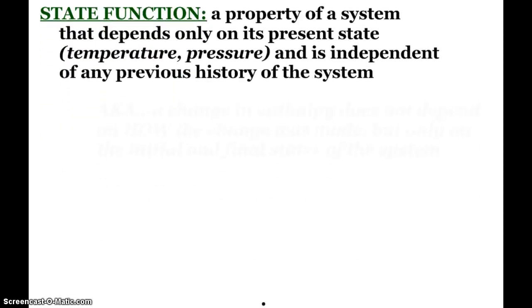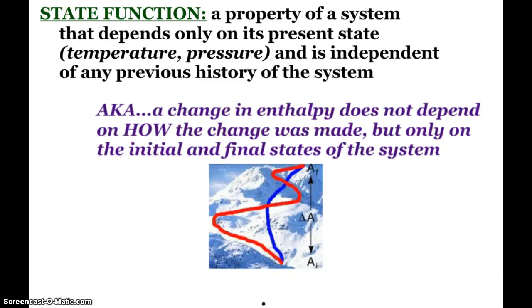Enthalpy is also what we call a state function, a property that depends only on the present state—perhaps temperature or pressure—and is independent of any previous history of the system. What does this mean? A change in enthalpy does not depend on how the change was made, but only on the initial and final states of the system. Here you see a diagram of mountain climbers. If everyone starts here and finishes there, we all have the same change in altitude, ΔA. It doesn't matter that one group took a winding route while another took a more direct route. What matters is start to finish—we all have the same change. That's called a state function, and we'll use that quite often throughout this unit.